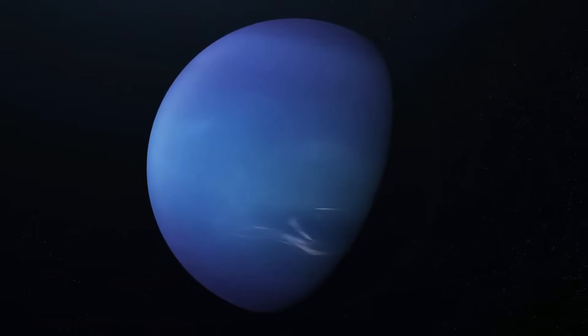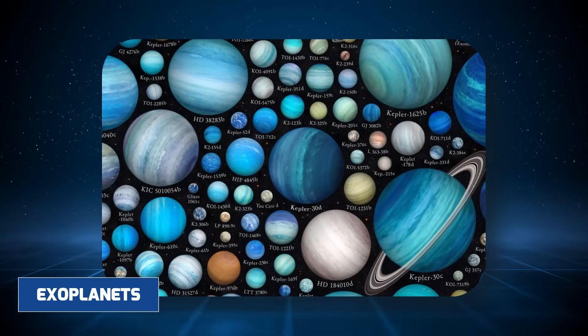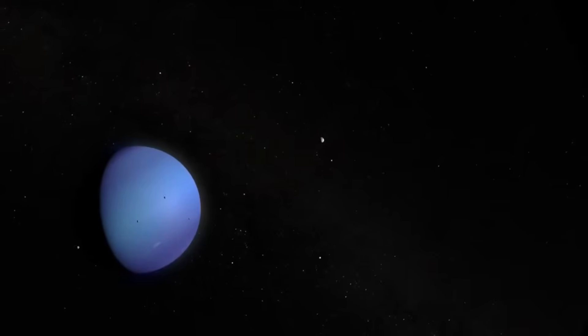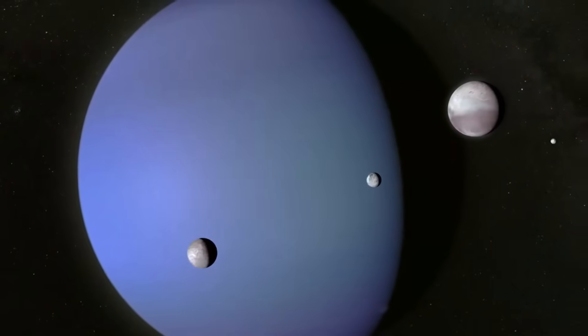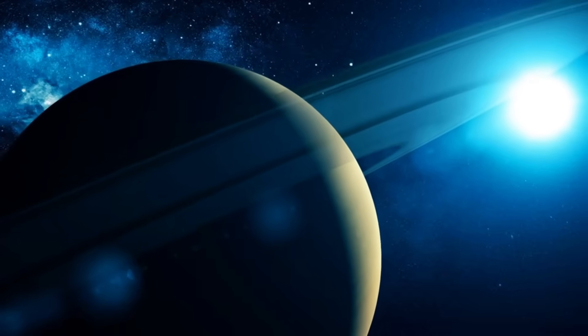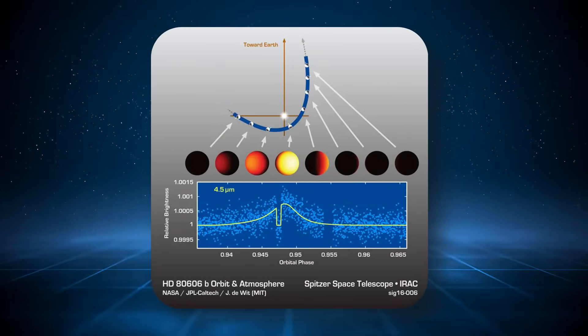The discovery also stokes curiosity about exoplanets. Many exoplanets detected so far fall into the Neptune-like category in terms of size and presumed composition. If Neptune itself is not what we thought, what does that say about our interpretations of distant worlds we can only infer through light curves and radial velocities?